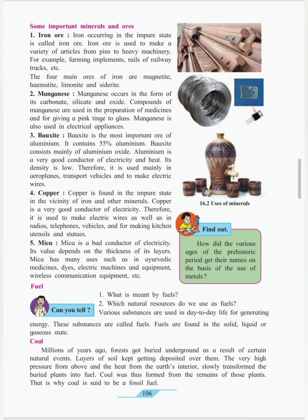Copper is found in the impure state in the vicinity of iron and other minerals. Copper is a very good conductor of electricity. Therefore, it is used to make electric wires as well as in radio, telephones, vehicles and for making kitchen utensils and statues.